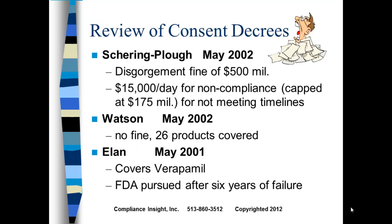A quick summary of additional cases: Schering-Plough in 2002 had a disgorgement fee of $500 million, with $15,000 per day for non-compliance capped graciously at $175 million for not meeting timelines. Watson had no fine but 26 products were covered under their decree. Elon's consent decree was pursued by the FDA after six years of failure by the company to comply — which underscores how critical it is to comply with these requirements up front.